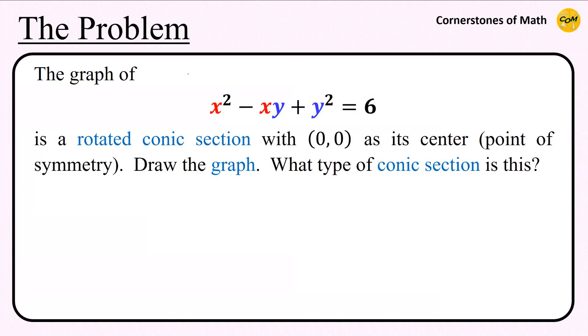Hello, and welcome to yet another video of Cornerstones of Math. The graph of x squared minus xy plus y squared equals 6 is a rotated conic section with (0,0) as its center. That is, the graph is symmetric with respect to the origin, which can also be easily inferred from the equation itself. So we are going to draw this graph, and we will also determine what type of conic section it is.